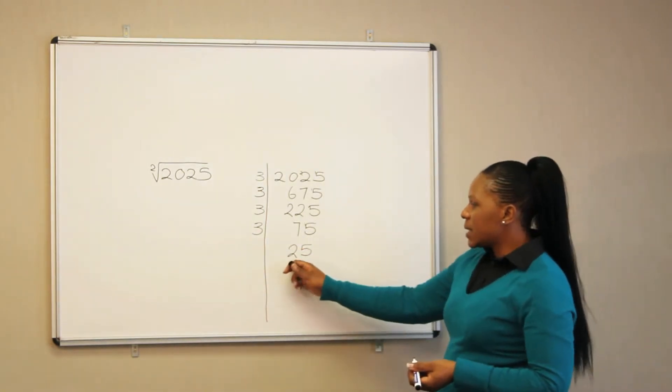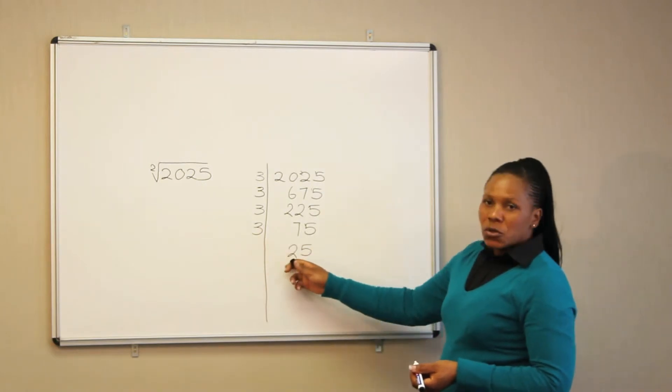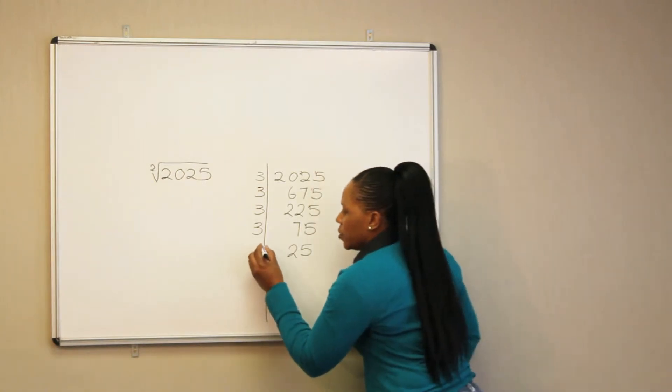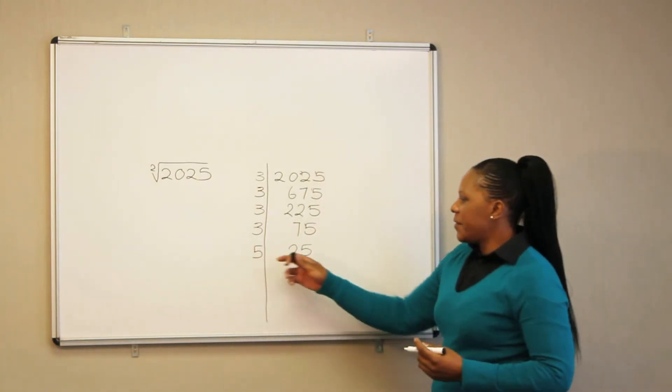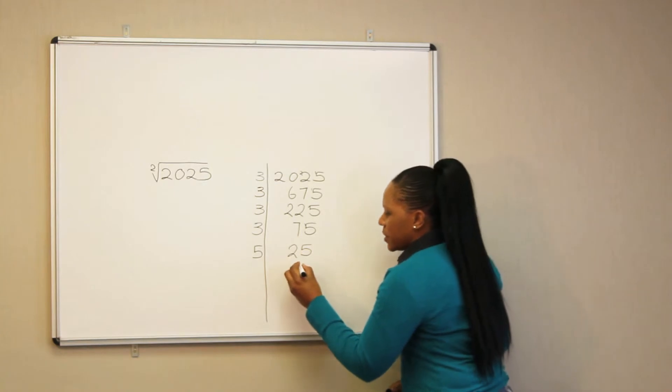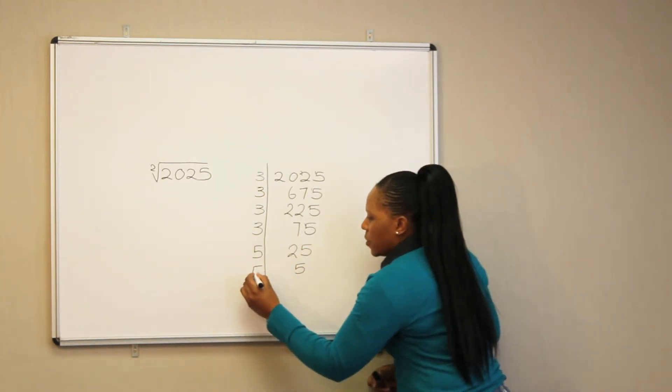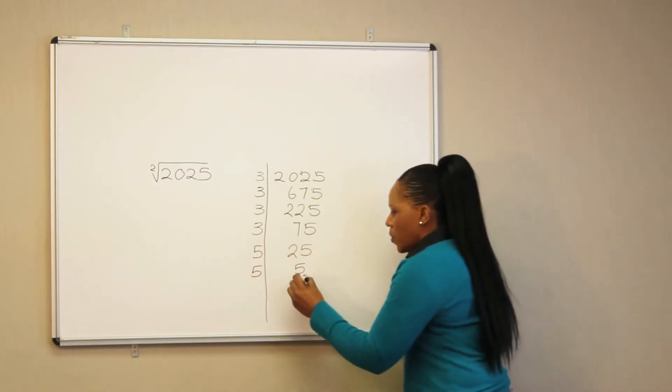In this case, 3 cannot go into 25, but the next smallest factor is 5. So we are going to use 5. 5 into 25, it goes 5 times. 5 also goes into 5, so 5 into 5, we get 1.